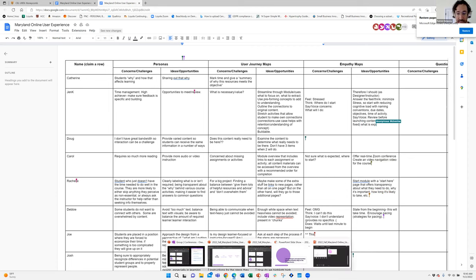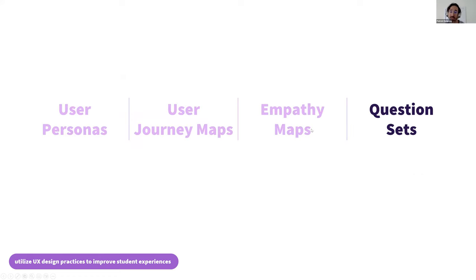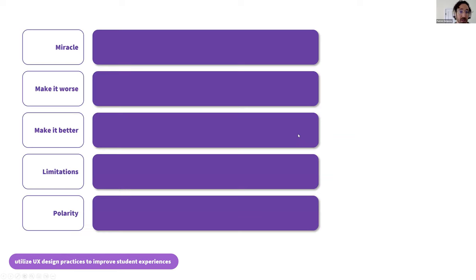Now we're on the last one. Question sets take less time and you can do them by yourself — just ask these questions to yourself, or to others when having difficult conversations. Some of these come from solution-focused counseling or therapy. We'll go through each and give an example. Say you have an assignment that takes too much time, or you're helping someone create better assessment: the miracle question — imagine you created a final project and all your students said they love it. Describe what the students did and list the reasons they gave for loving it. Pretend it was great — what would people be doing, what would students be saying?